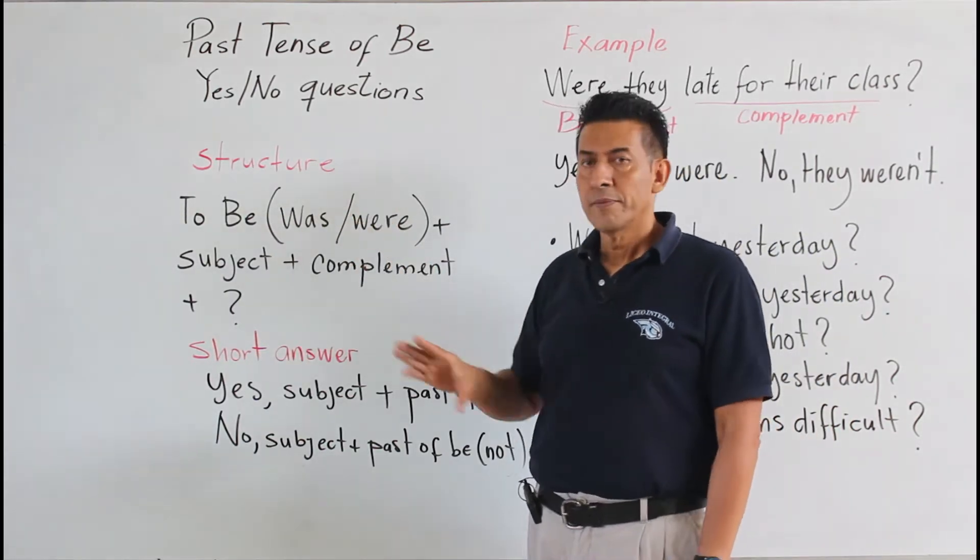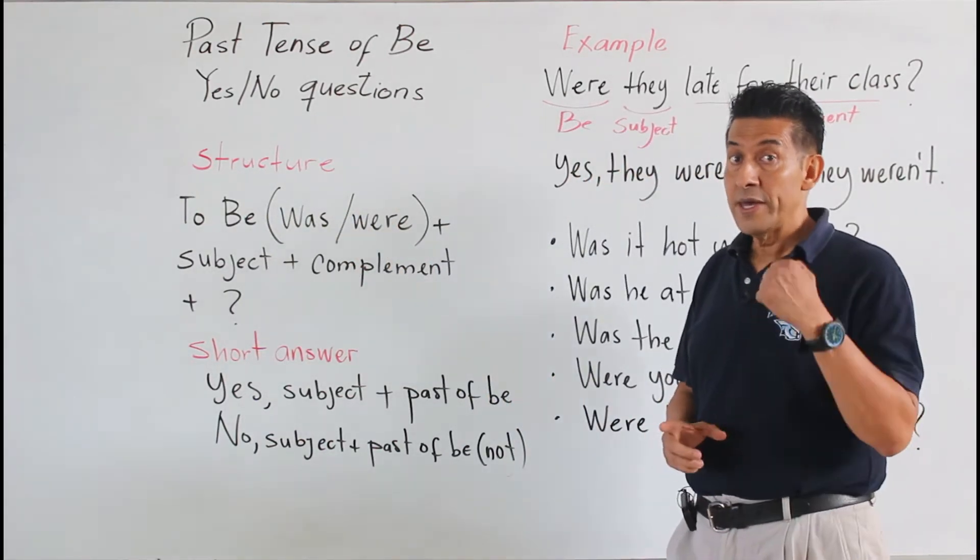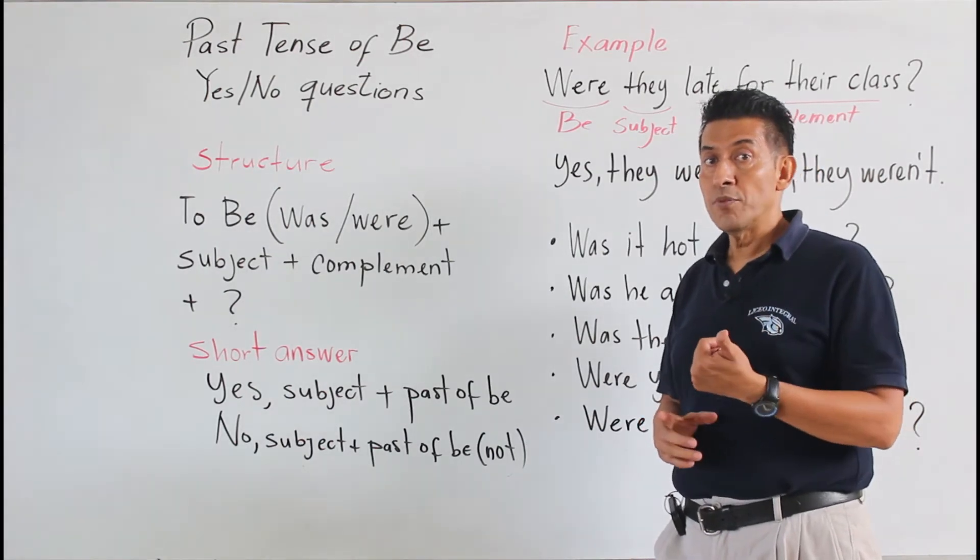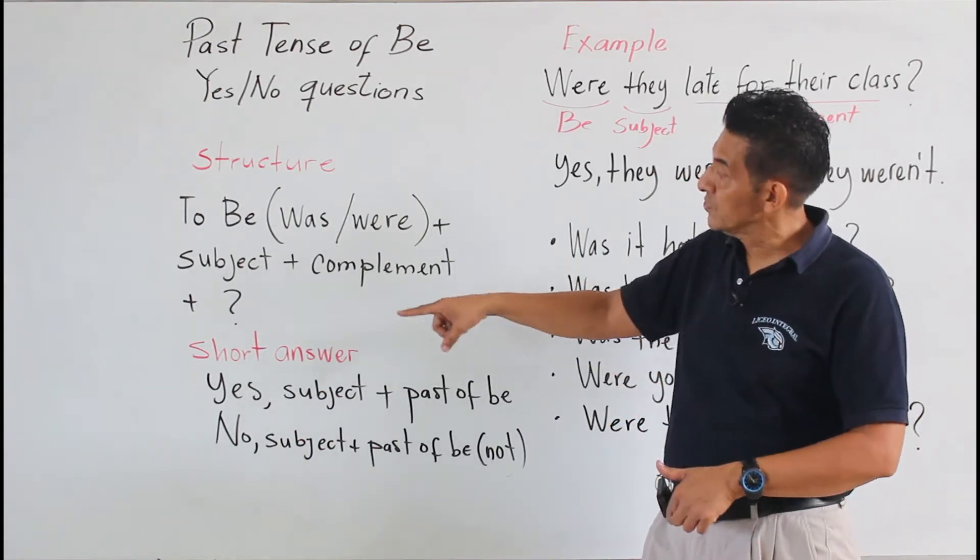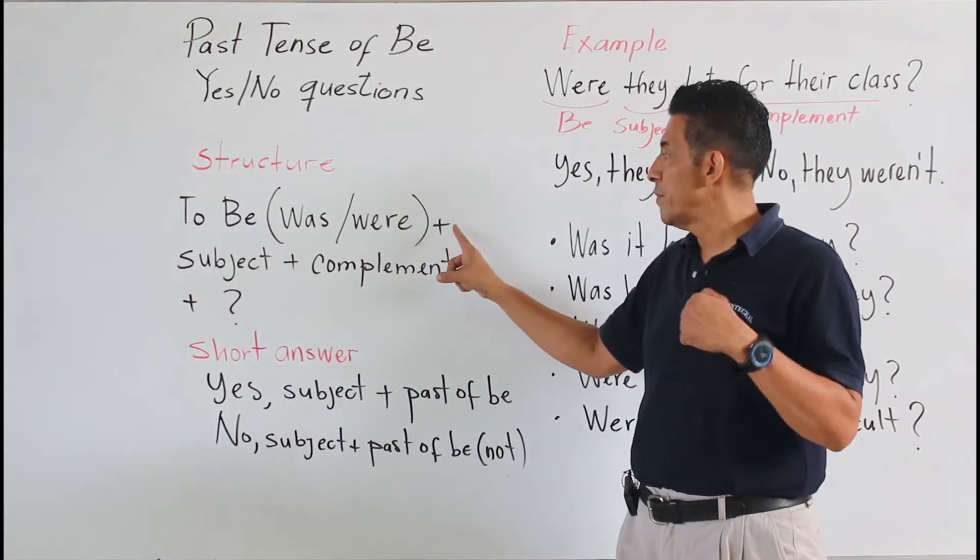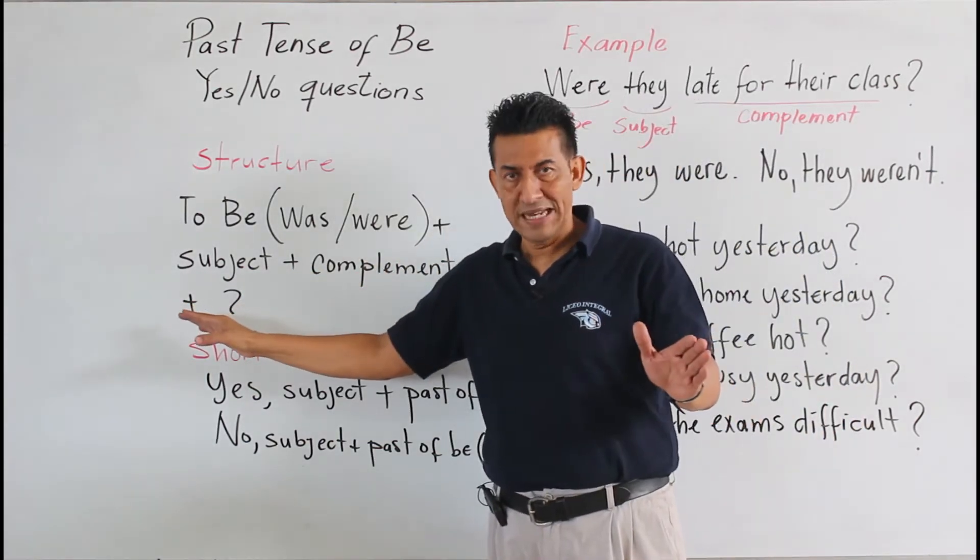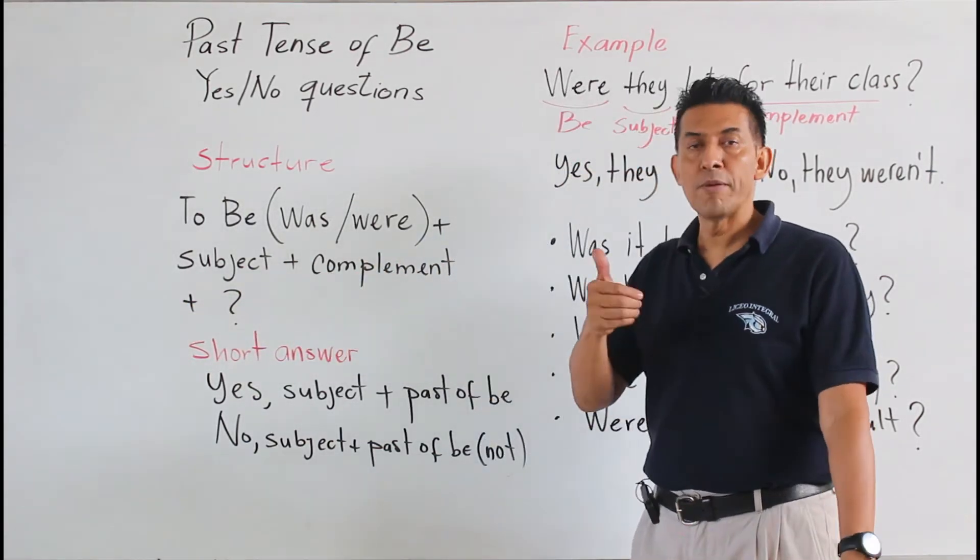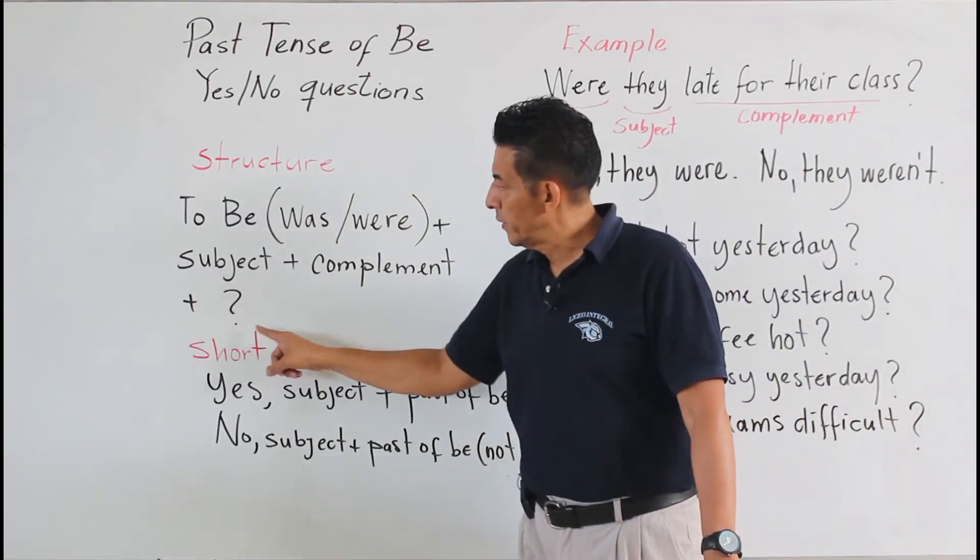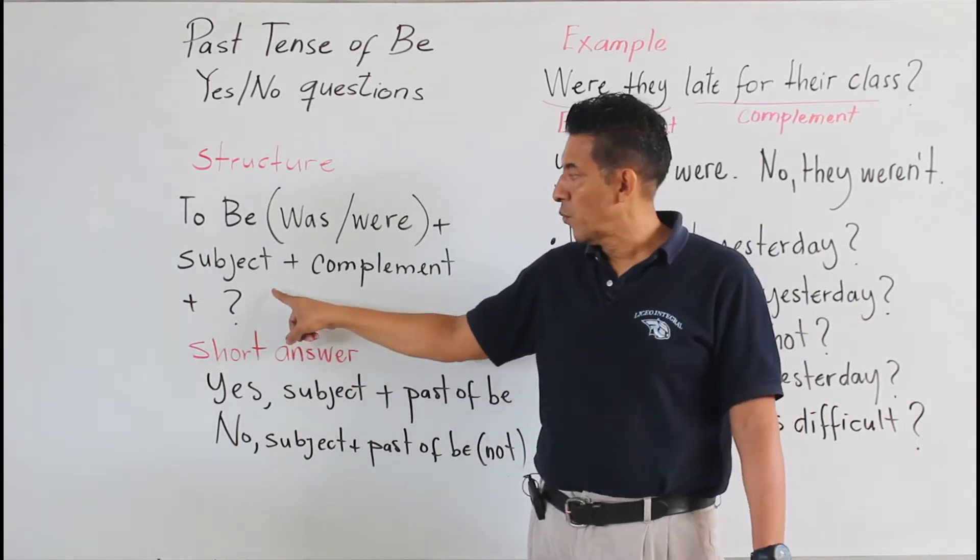La estructura: tenemos que iniciar con el verbo to be, was o were. Y va a depender del sujeto que vamos a estar utilizando, más el complemento y un signo de interrogación, question mark.